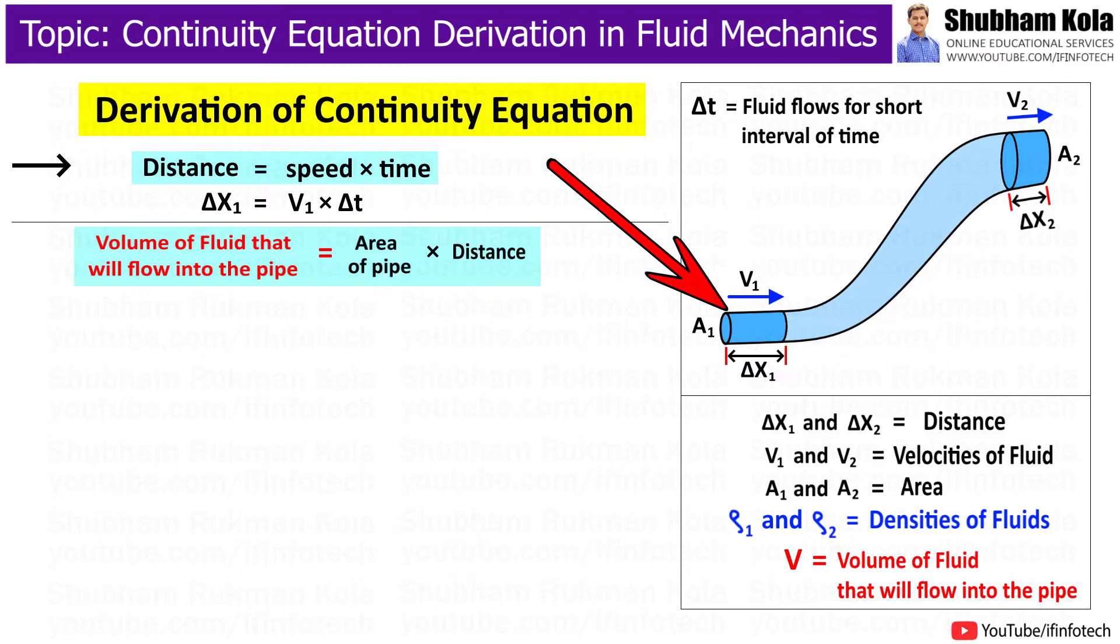Now, at the lower end of the pipe, the volume of fluid that will flow into the pipe will be indicated by capital V. Therefore, capital V equals area A1 times delta x1, where delta x1 we have already formulated as v1 times delta t. So I will substitute this value.